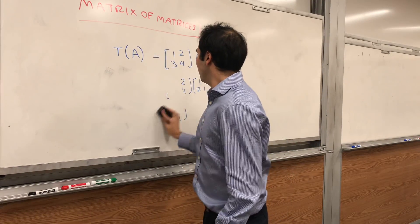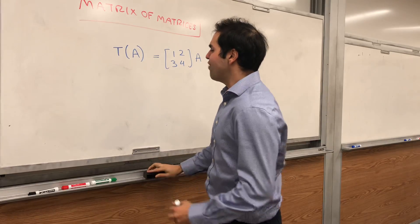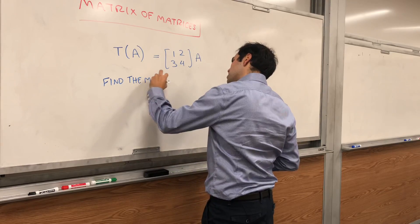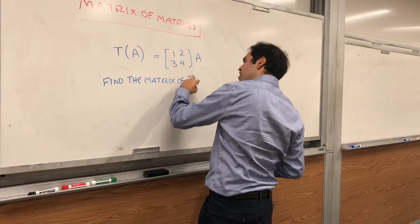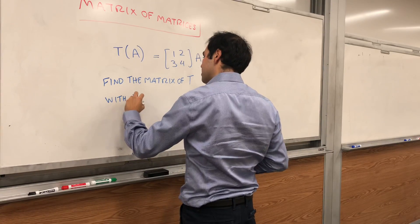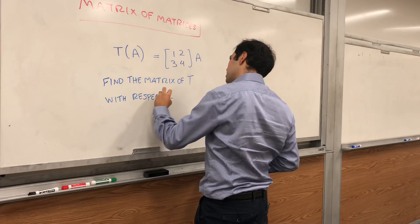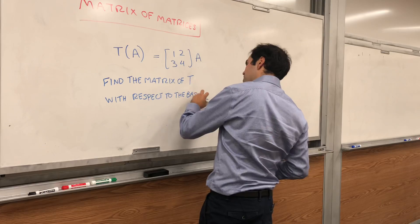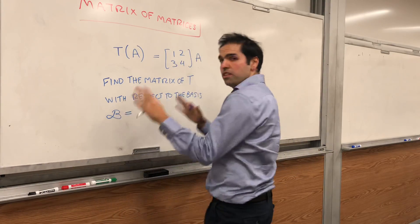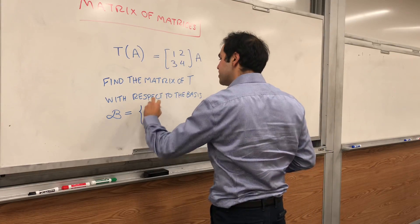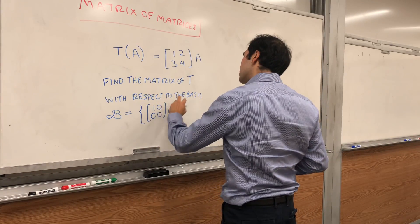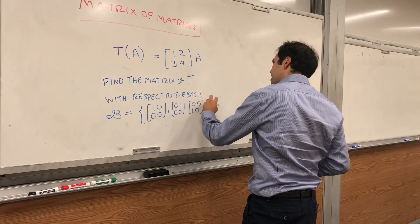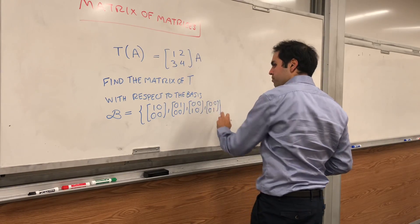So what is the goal here? The goal is to find the matrix of T with respect to the basis B, where the input basis equals the output basis: B = {[1,0,0,0], [0,1,0,0], [0,0,1,0], [0,0,0,1]}.